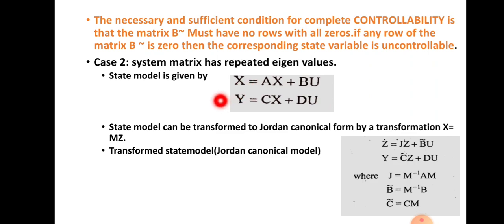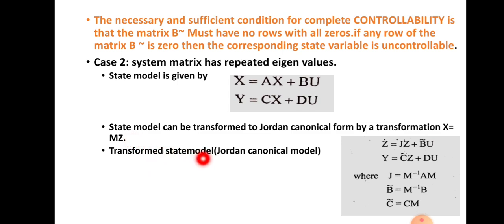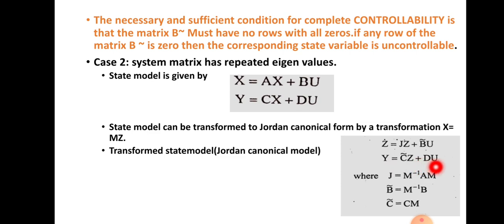The state model can be transformed into Jordan canonical form using the same transformation x = Mz, where M is the modal matrix. The transformed Jordan canonical form is: z-dot = Jz + B̂u, and y = Ĉz + Du, where J is obtained by the transformation J = M⁻¹AM.